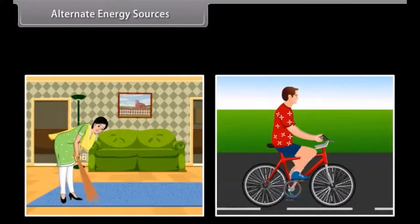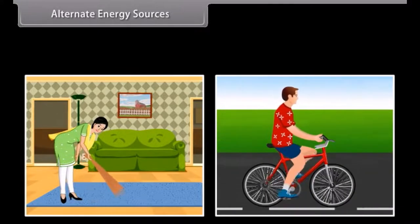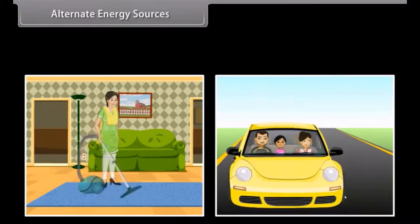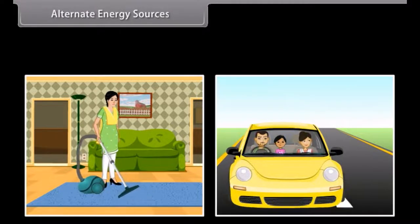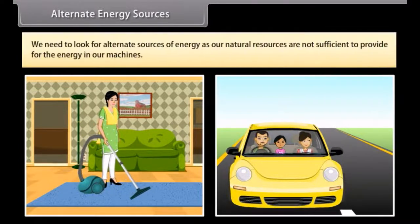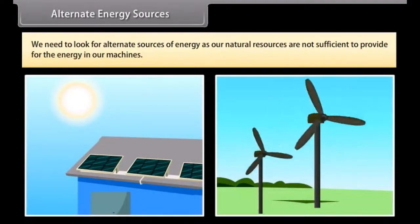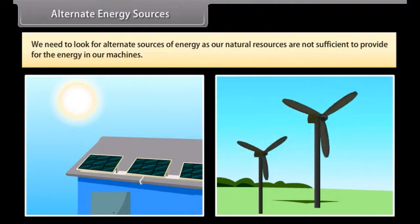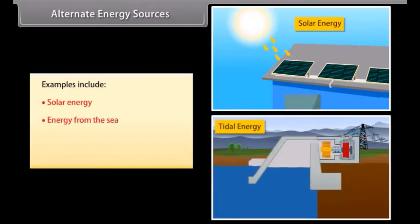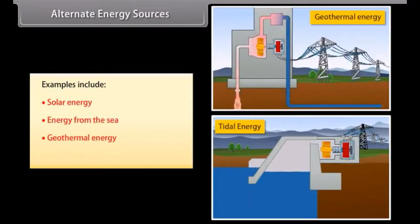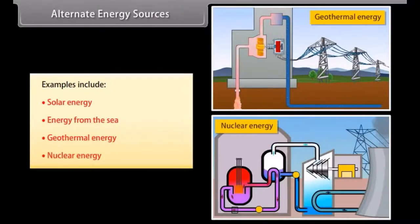Alternate energy sources. As we progressed, our day-to-day life activities also changed. We now get most of our work done by machines. Due to this, we need to look for alternate sources of energy as our natural resources are not sufficient to provide for the energy in our machines. Examples include solar energy, energy from the sea, geothermal energy, and nuclear energy.